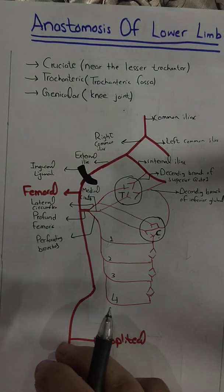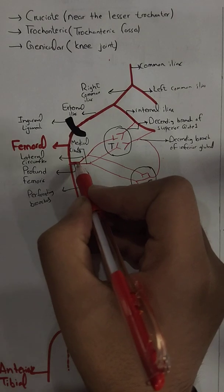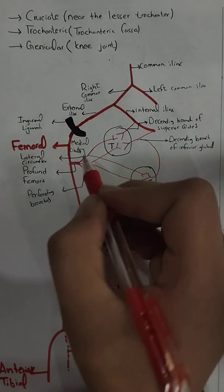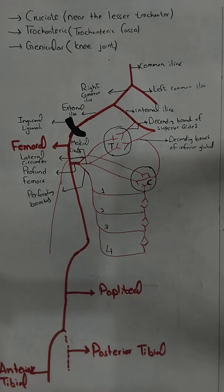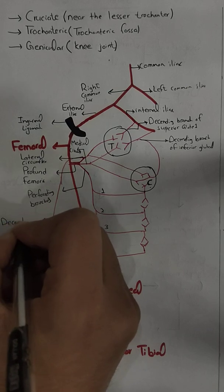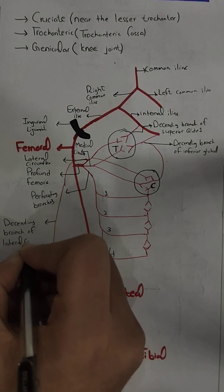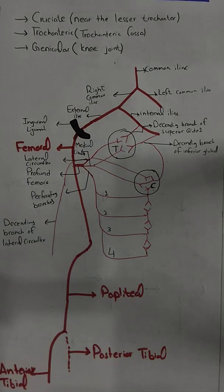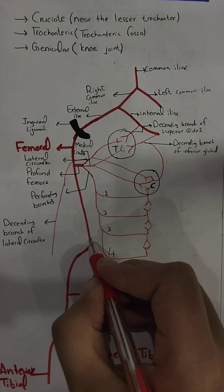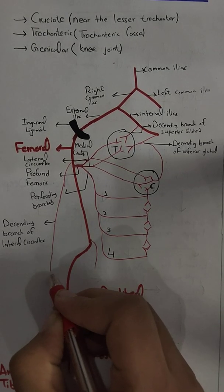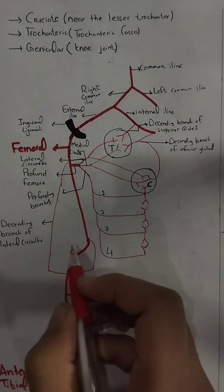Now we move to the third anastomosis — the genicular anastomosis around the knee joint. The lateral circumflex also gives a descending branch — this will be the descending branch of the lateral circumflex femoral artery. The femoral artery, before becoming the popliteal artery, gives a descending genicular branch. These branches reach the level of the knee joint and anastomose with each other.